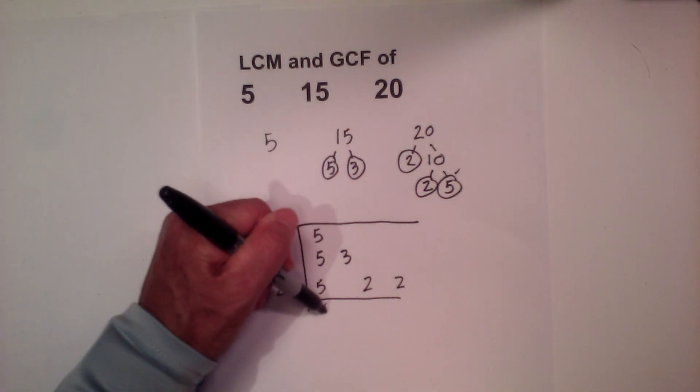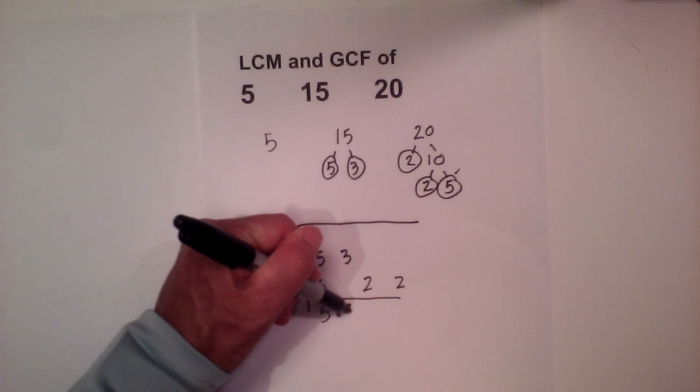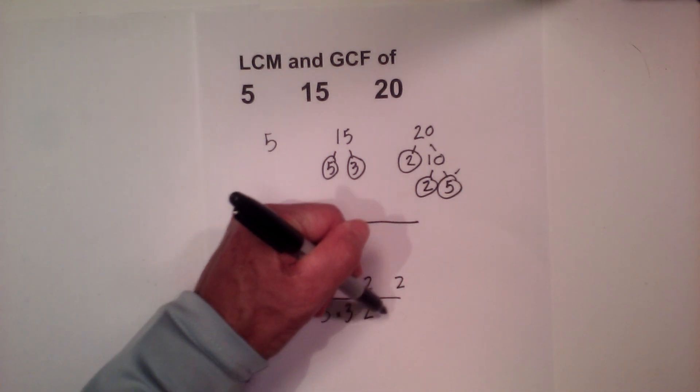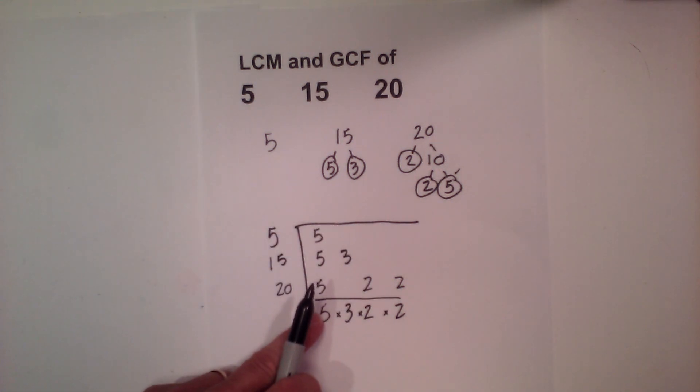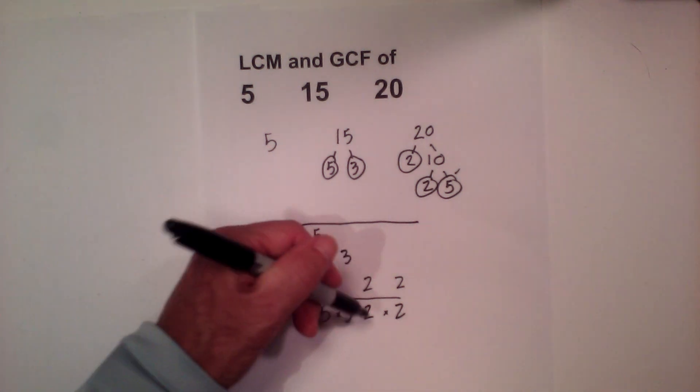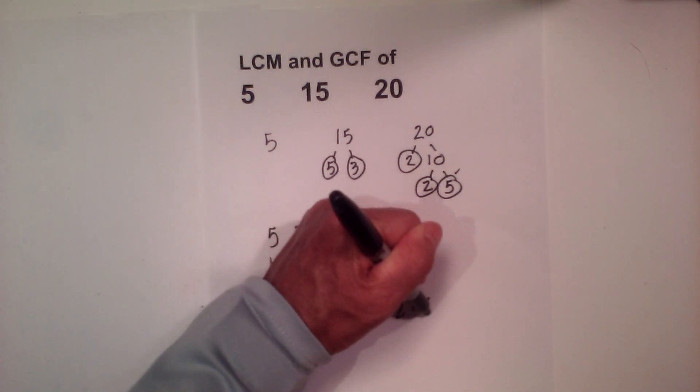So I have 3 fives so I am going to use a 5. I only have one 3 so I will use a 3. And then I will use the 2's. So when you multiply all this together you have 5 times 5 is 15 times 2 is 30 times 2 is 60. So the LCM equals 60.